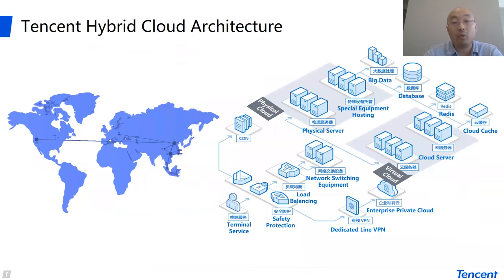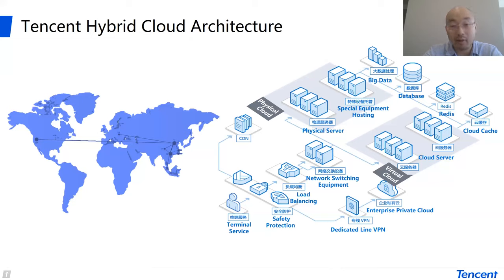In terms of Tencent, we are a little special and different from other companies because at the same time, we build our private cloud and we are one of the biggest public cloud providers in the market. So we have simultaneously a private cloud and a public cloud. Several years ago, we already launched a hybrid cloud architecture. We have a private cloud based on T-Stack, and we have a network architecture that can bring together the private cloud and our public cloud data centers. Through this philosophy, we launched hybrid cloud several years ago and most of our internal applications are based on the hybrid cloud mode.